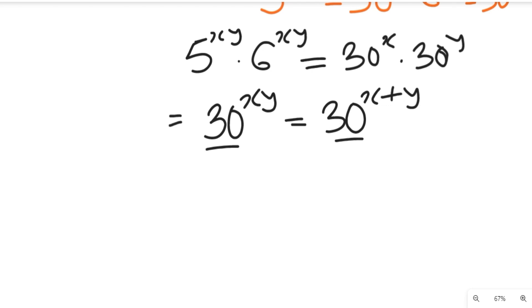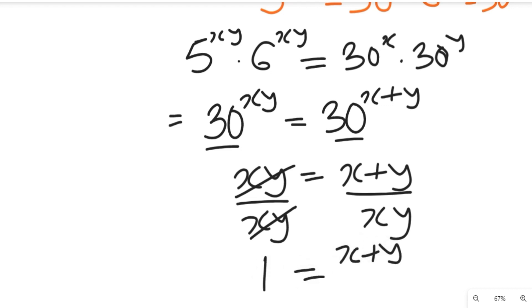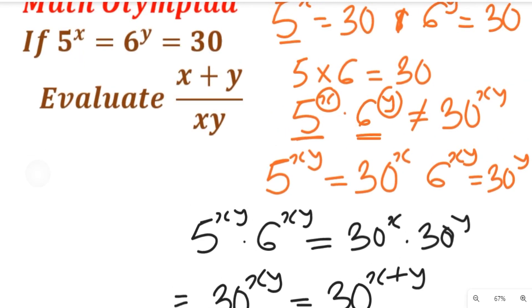To simplify this expression, because we have the same base, the exponent will equate. So we'll have xy to be equal to x plus y. To simplify this, we divide both sides by xy. This will give us one, and this will be equal to x plus y divided by xy. Now recall what our expression is: we are asked to evaluate x plus y divided by xy.